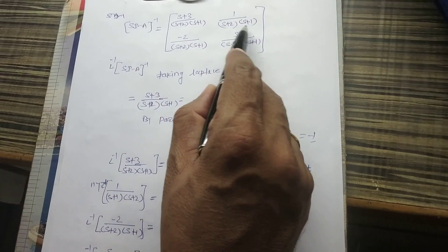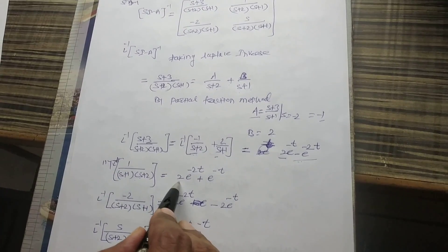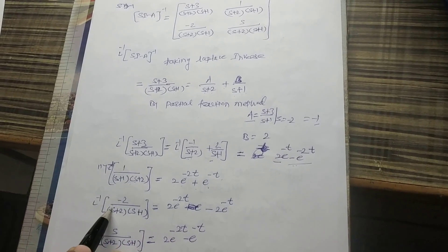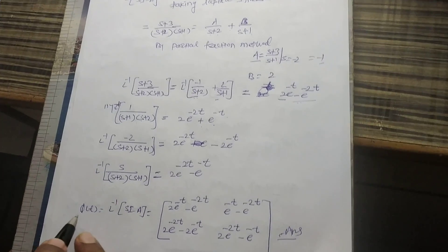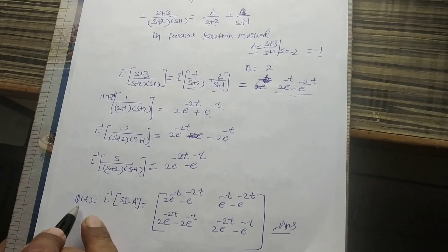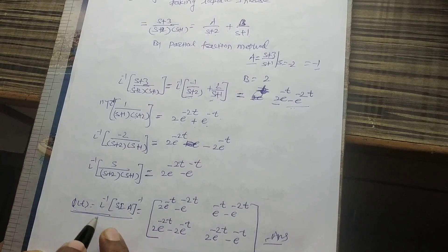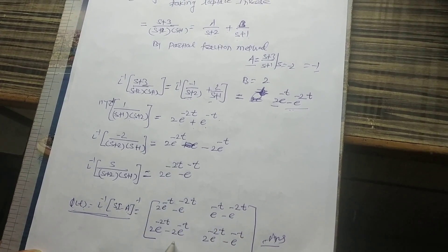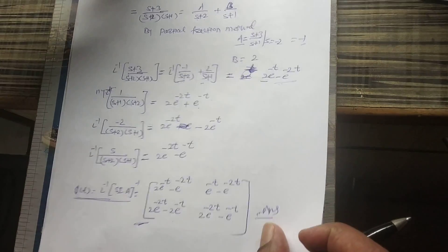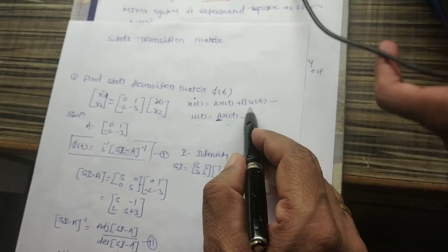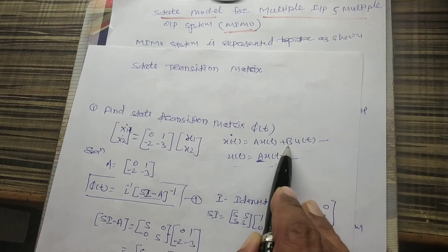For the second element, 1/[(s+1)(s+2)], using partial fractions and taking the Laplace inverse, we get e^(-t) minus e^(-2t). Similarly, we find the Laplace inverse of the third and fourth elements. The resulting matrix is our state transition matrix φ(t), which is the Laplace inverse of (sI - A) inverse.